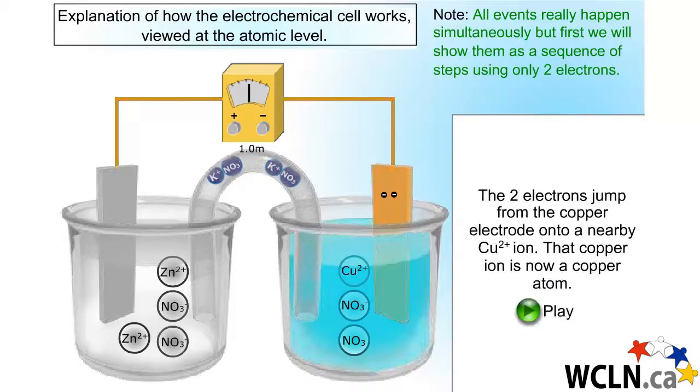The electrons will jump from the copper electrode onto a copper ion, thereby reducing it to copper metal.